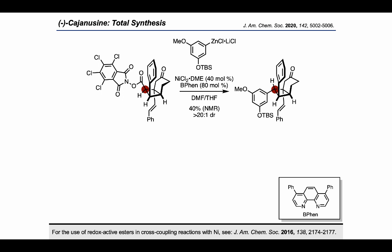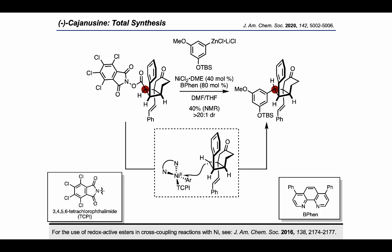Here, they were able to achieve excellent diastereoselectivity by generating a radical that could be trapped by the nickel species shown, to form a challenging new carbon–carbon bond.